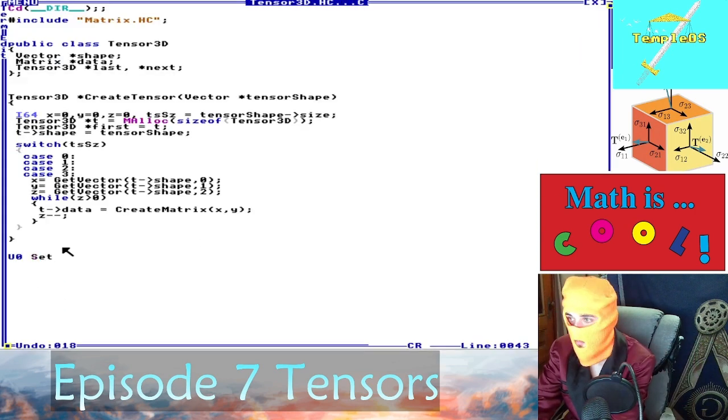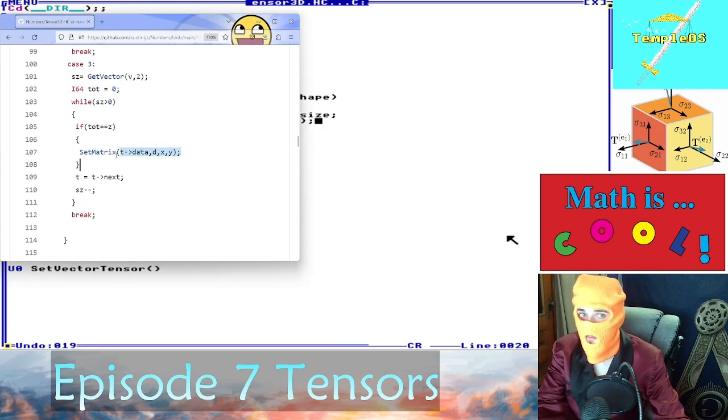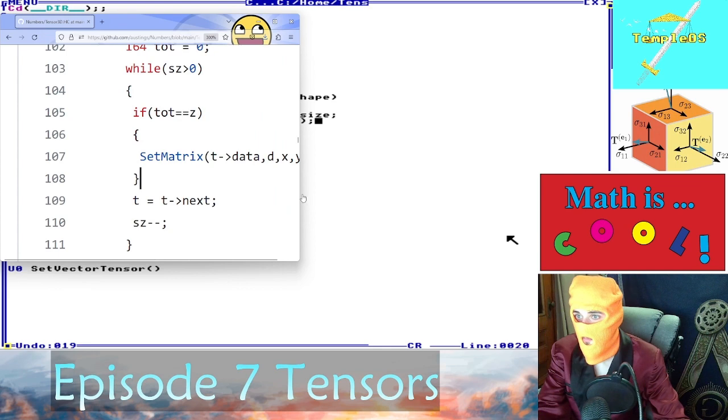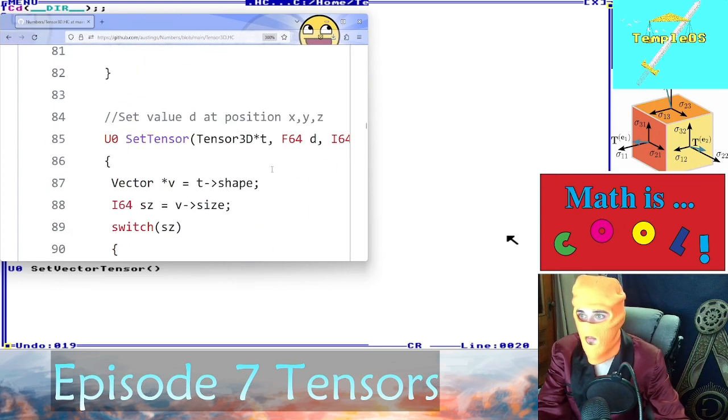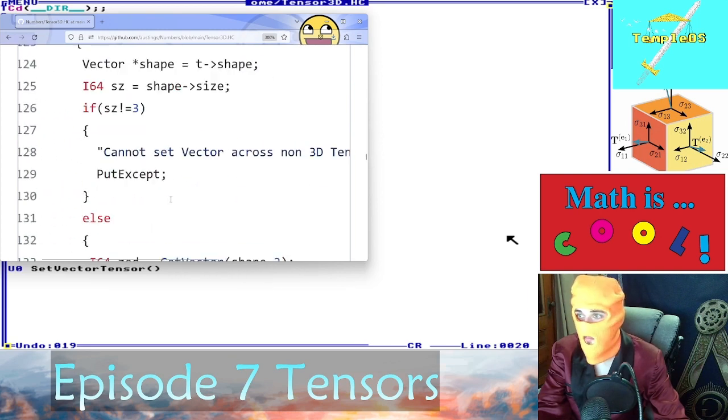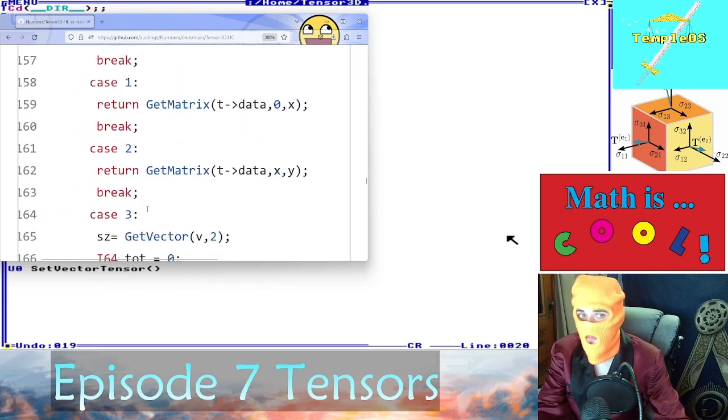This is just the code for a queue, so we're just looping through the queue. Every time you have a new z, you have to loop through the queue. How we set the values in the tensor: you can use set tensor or set vector tensor. So here you can see it's just setting the matrix value. You pass in the exact xyz that you want.